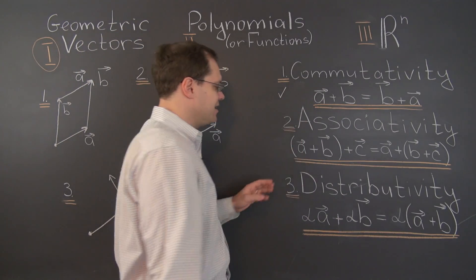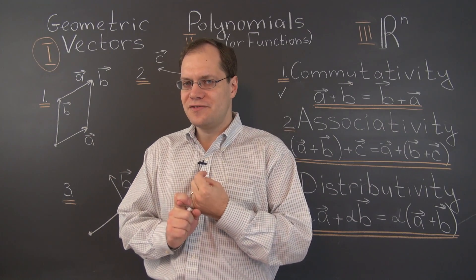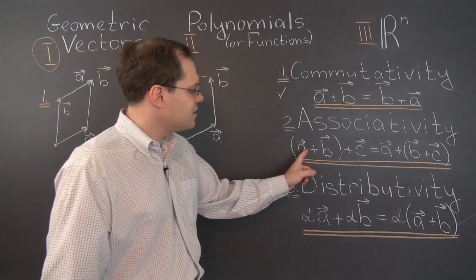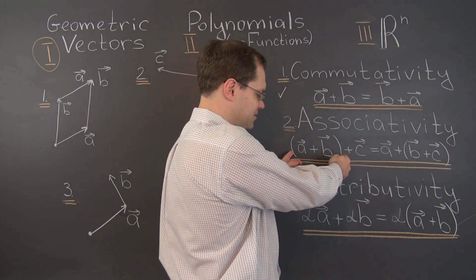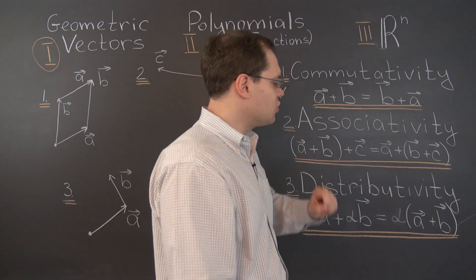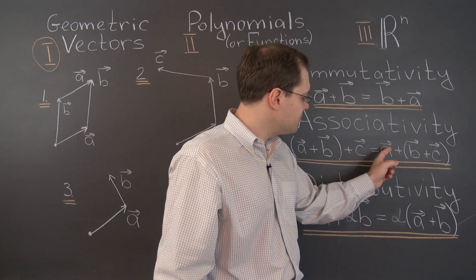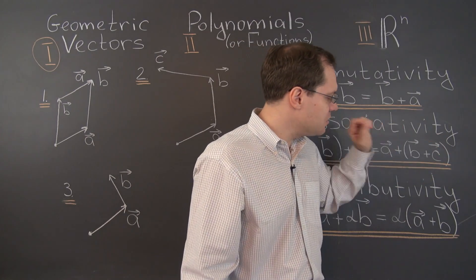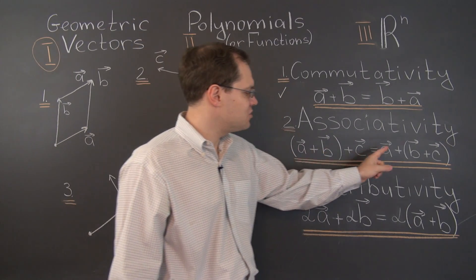Let's move on to associativity. There will be something very interesting to say about it. Associativity involves three vectors: one trip according to A, one according to B, and one according to C. The left-hand side means you look at the aggregate effect of trips A and B, then tack on a trip according to C. If we didn't have commutativity, we'd really have to pay attention to the order of terms.